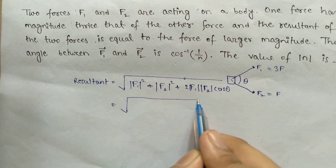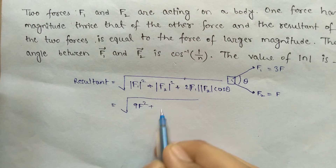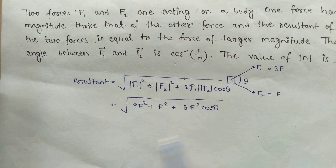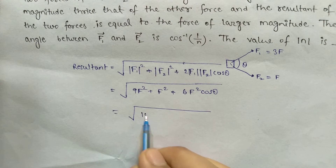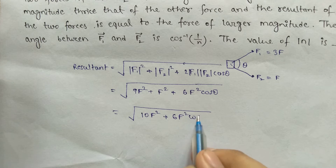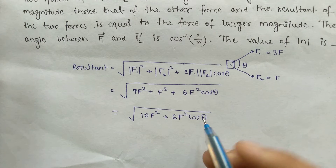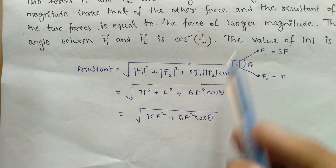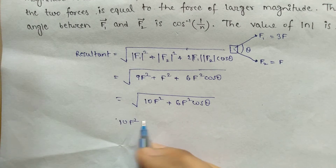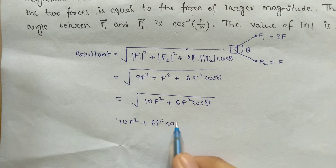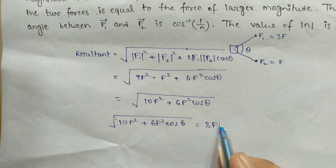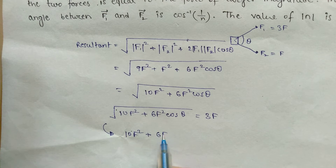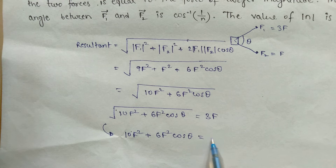Since the resultant equals the larger force (3F), we set 3F equal to the square root of F² plus 9F² plus 6F²cosθ, which gives 9F² equals 10F² plus 6F²cosθ.